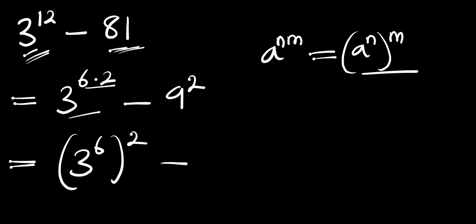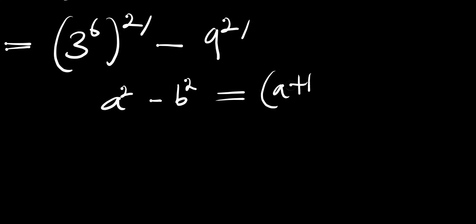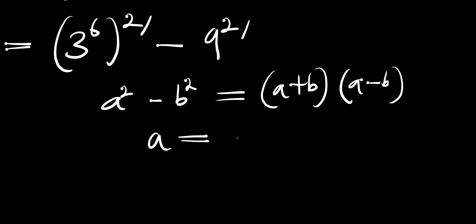So we have 3 raised to the power of 6, all raised to the power of 2, minus 9 raised to the power of 2. We have a power of 2 in both terms, so we can make use of the difference of two squares. That means if you have a raised to the power of 2 minus b raised to the power of 2, this equals a plus b times a minus b.